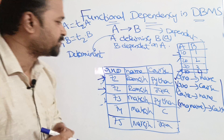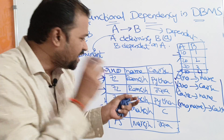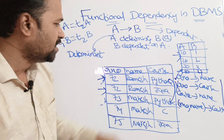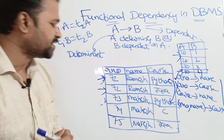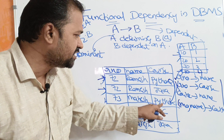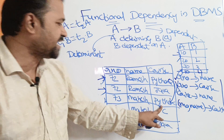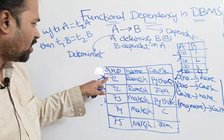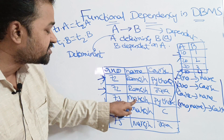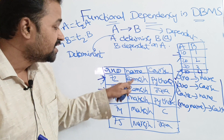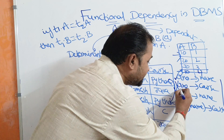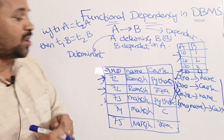The third functional dependency is: course determines name. Considering the two tuples where the course is the same — T1.course = Python and T2.course = Python — then T1.name should equal T2.name. But T1.name is Ramesh and T2.name is Mahesh — they are not equal. So this functional dependency is also wrong.